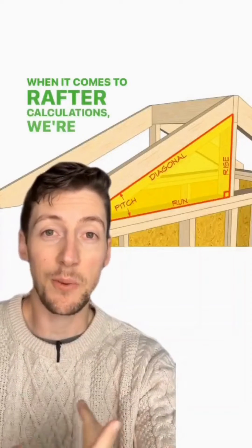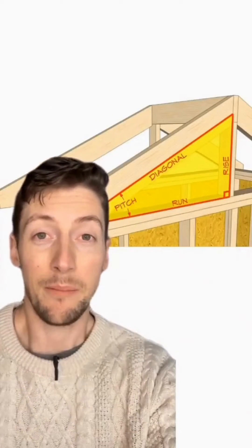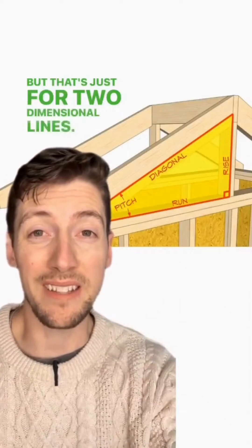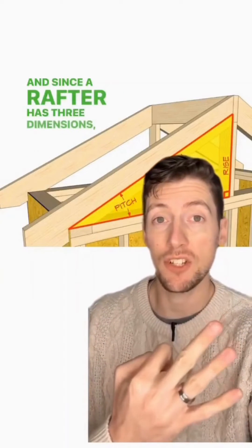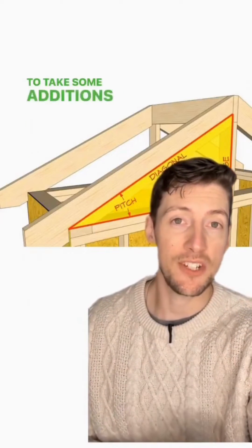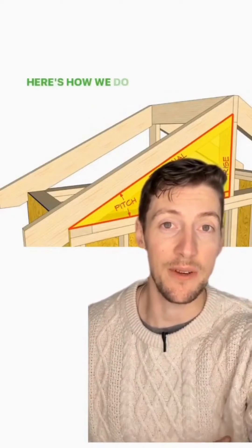When it comes to rafter calculations, we're going to need the Pythagorean theorem. But that's just for two-dimensional lines. And since a rafter has three dimensions, we're going to need to take some additions and deductions into account. Here's how we do it.